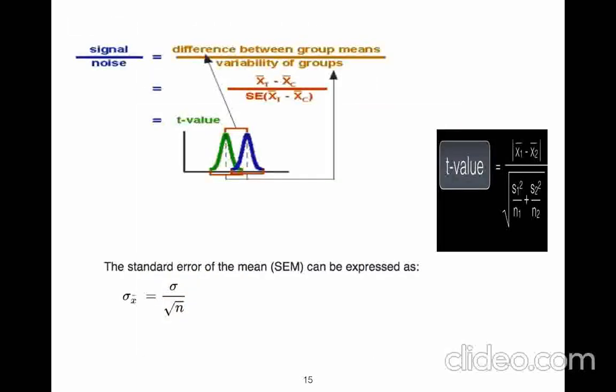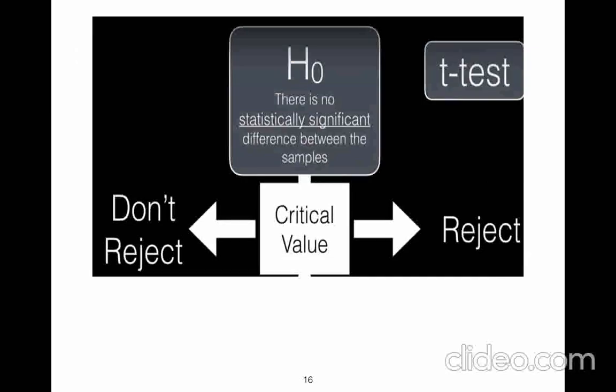And of course, t-statistic is just a measure of signal to noise. It shows how different samples, sample groups could be related to each other. So if there is no statistically significant difference between samples, it's a null hypothesis.